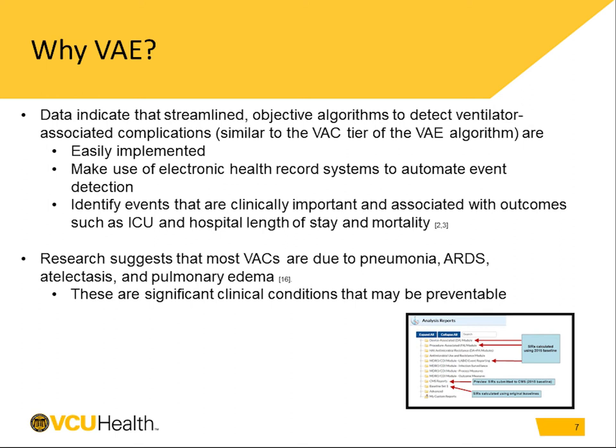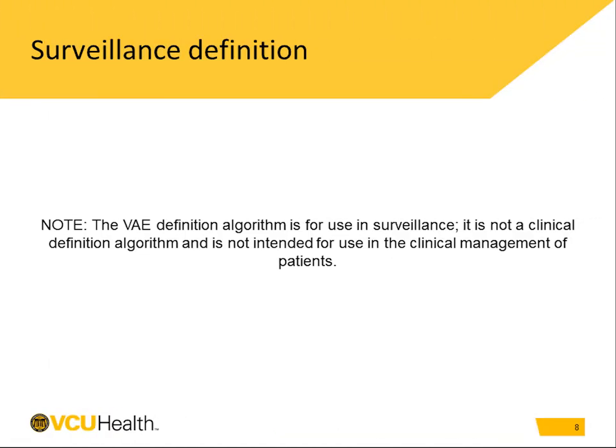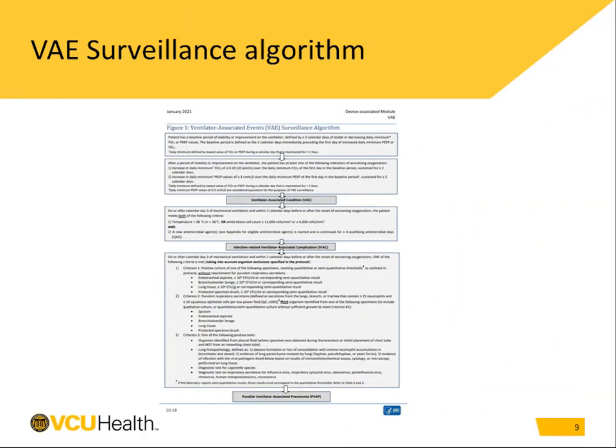Research suggests that most VACs are due to pneumonia, ARDS, atelectasis, and pulmonary edema. These are significant and preventable conditions. This is a surveillance definition designed to capture a snapshot of comparable data, and it may not always coincide with clinical diagnosis and treatment of patient conditions. Here is a snapshot overview of the ventilator-associated event, or VAE, algorithm.